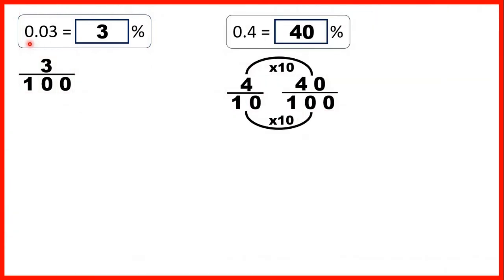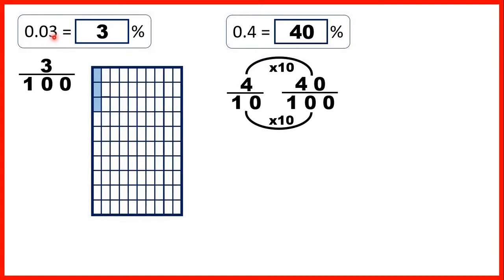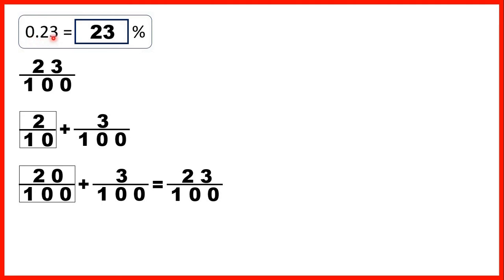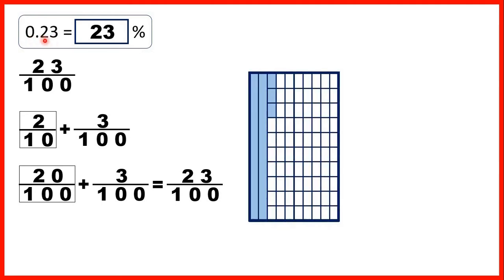So first we had 0.03 — we knew that was three hundredths, so three percent. Then we had 0.4, but we knew that 0.4 means we have four tenths, and a percentage is always a fraction which has a denominator of a hundred. So because we found that four tenths was equivalent to 40 hundredths, we could write that as 40 percent. Then we had 0.23 — really that's two tenths and three hundredths, but two tenths and three hundredths is the same as 23 hundredths, so that's why 0.23 is 23 percent.